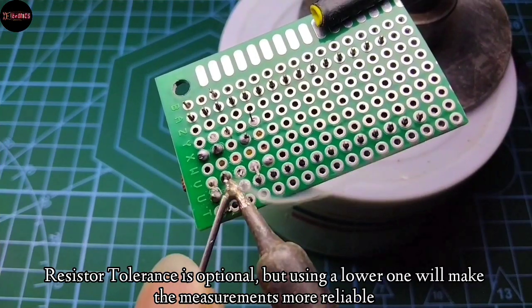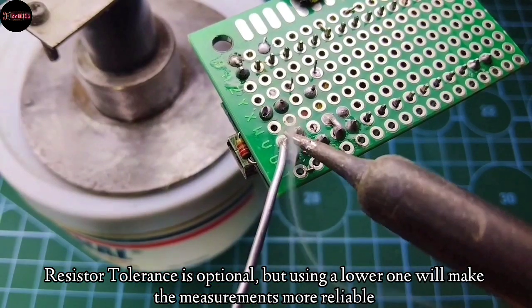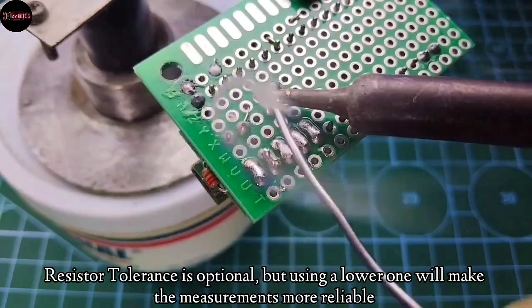Resistor tolerance here is optional, but using a lower one will make the measurements more reliable, so I'll recommend to use 1% tolerance.